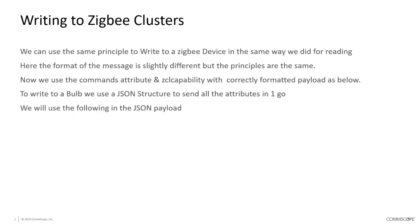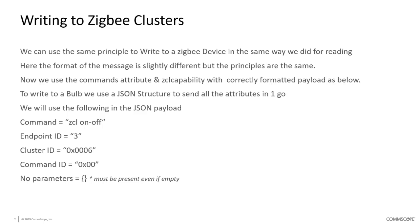The same principles we use for reading values from devices we can now use to write and format messages to devices. To do that we need to use the API, know the device EUI, and correctly format the structure of the message sent to the device. We put all the data into a JSON payload, providing information about the command, the endpoint we're talking to, and the specific cluster we're trying to control.